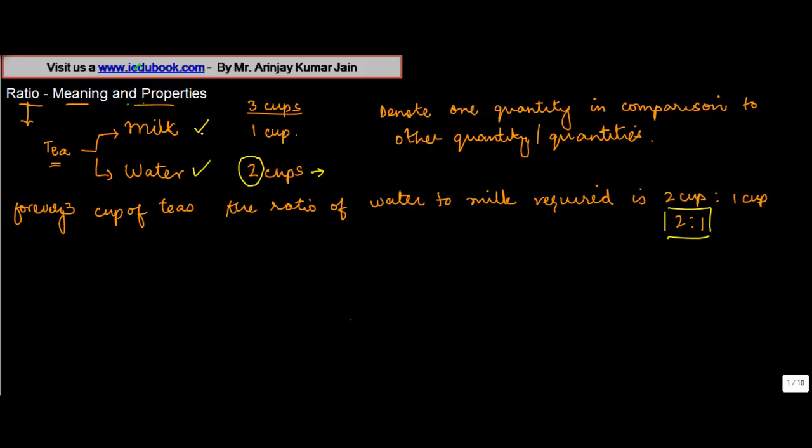So the purpose of ratio basically is to ensure or to reflect how much of one is needed vis-a-vis other under given circumstances. So in this case the ratio of two is to one denotes that for every two cups of water we require one cup of milk to produce three cups of tea.